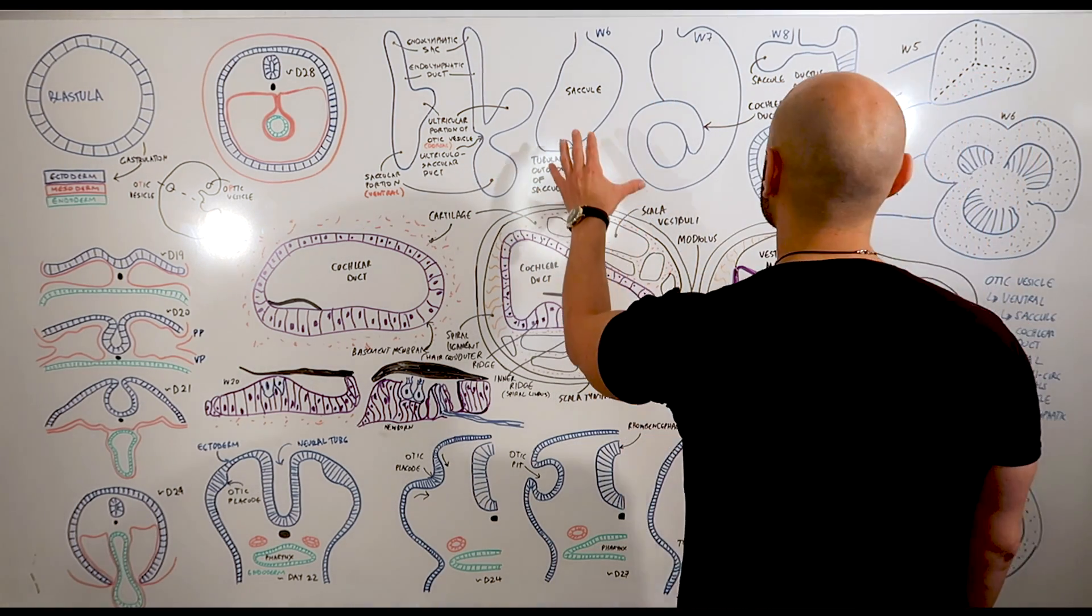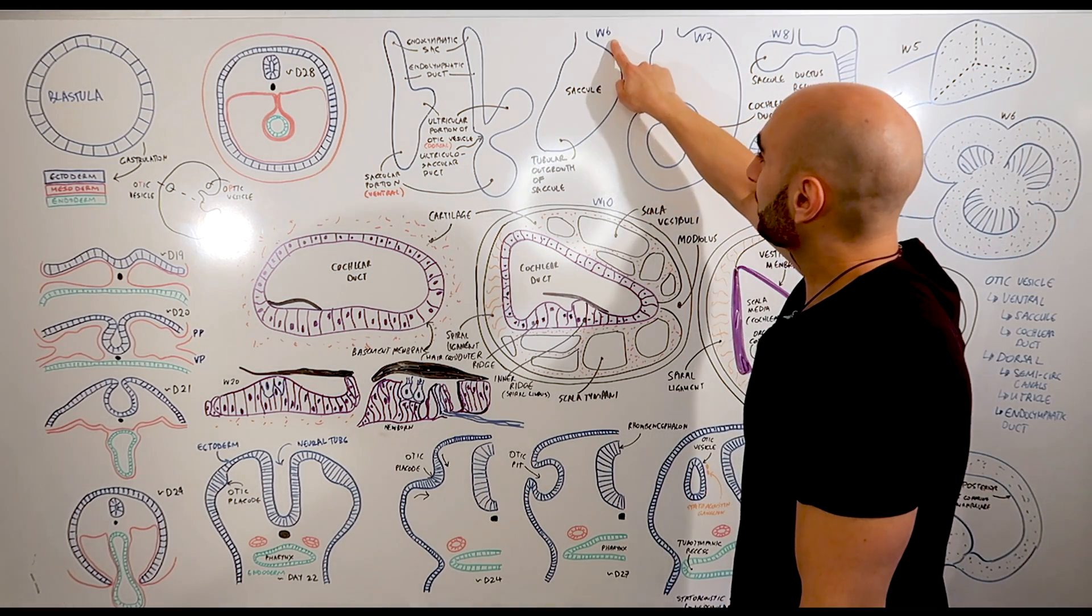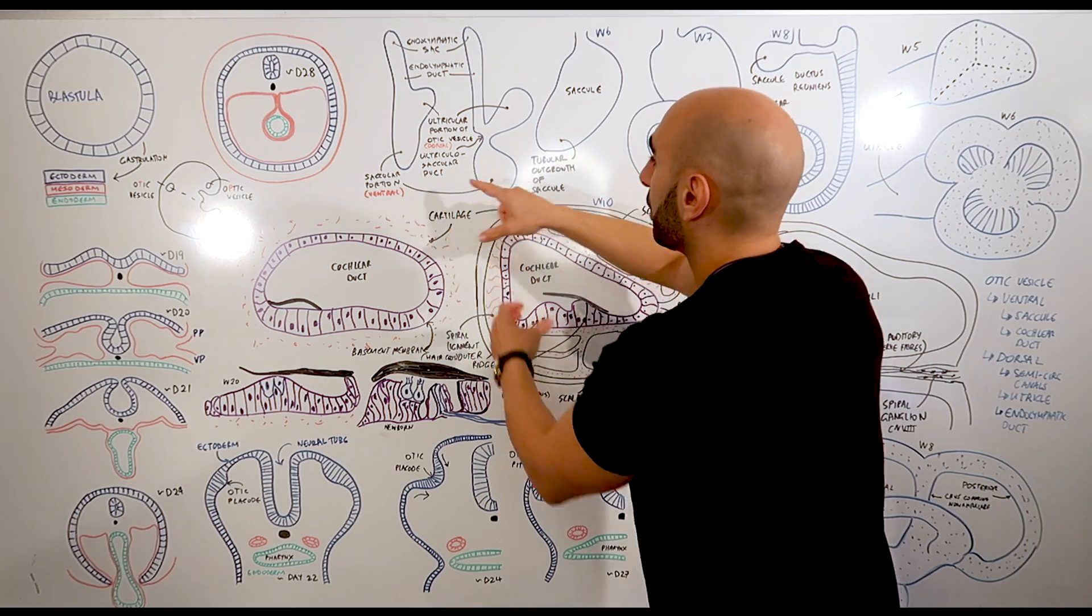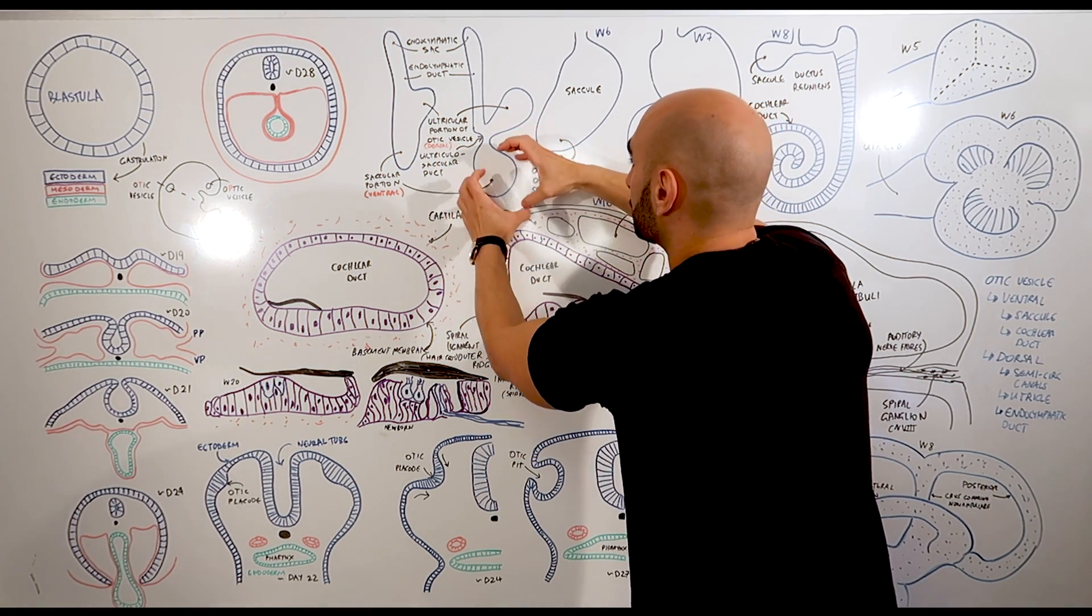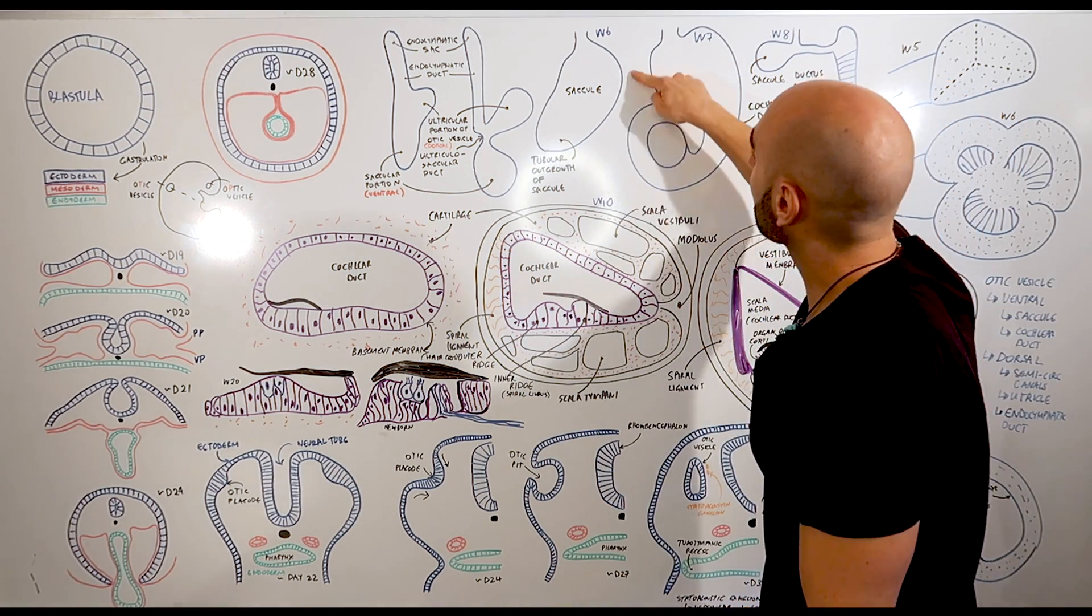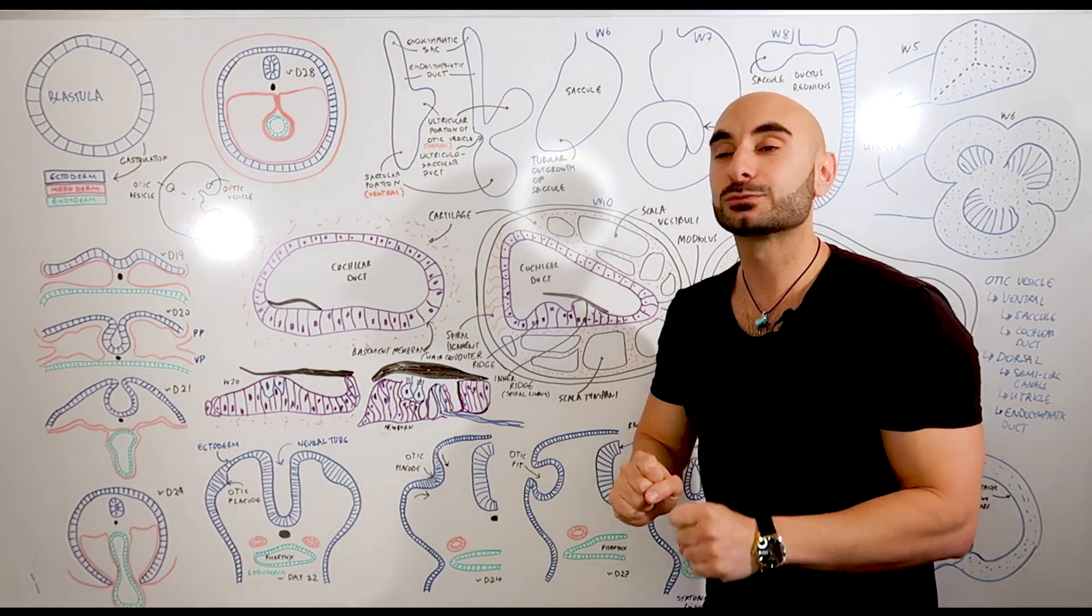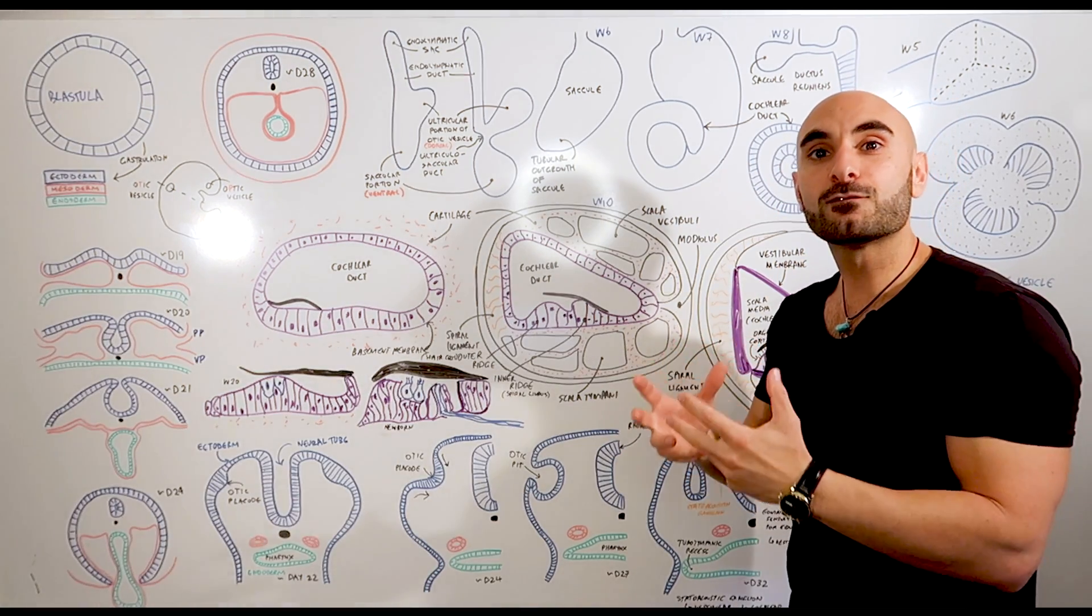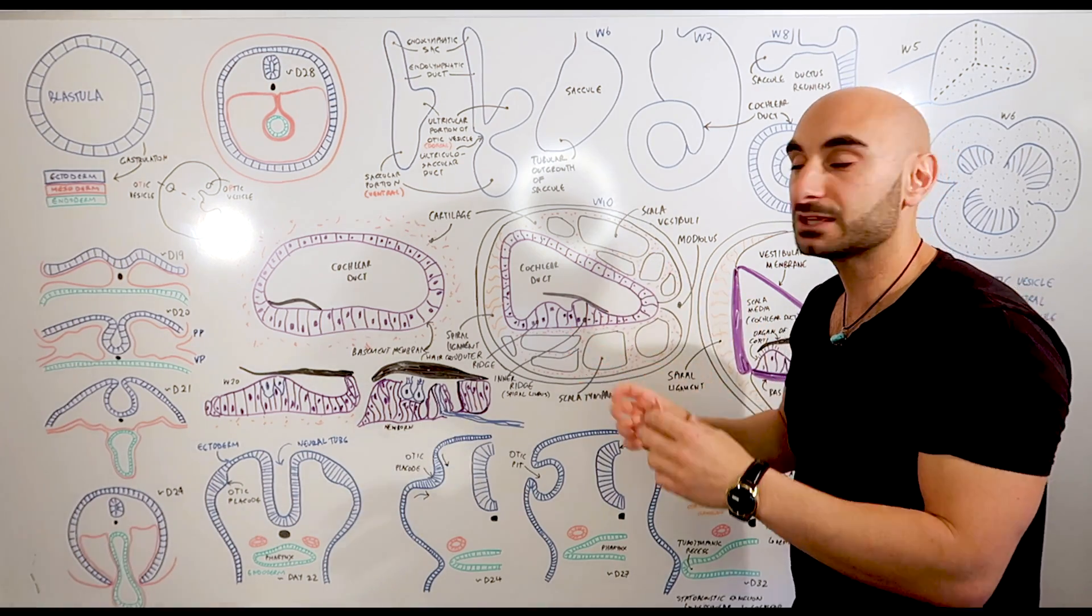So we're only going to focus now on these three. In week six, you'll form the saccule. It's an outgrowth of this part. So the ventral portion is growing, forming a saccule. And surrounding this saccule is undifferentiated tissue. This undifferentiated tissue will eventually form the cartilage surrounding all of the inner ear.